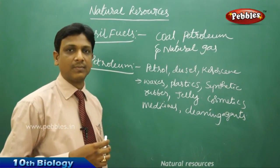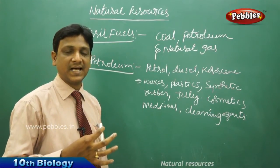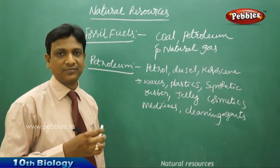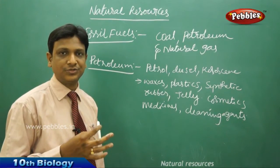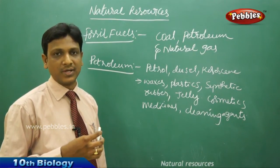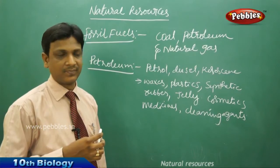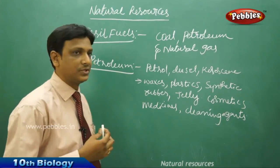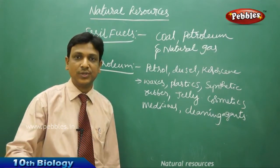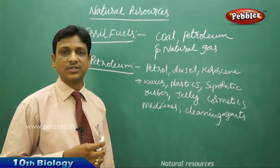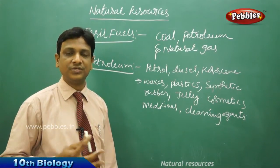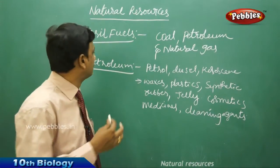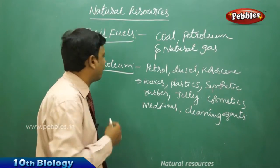Coal is used in thermal power stations to produce electrical energy, and the products of coal are also used in making many products. From fossil fuels, the remnants are used to make tar which is used to lay roads, and also waxes, shoe polish, and many other things. All these are produced from fossil fuels.